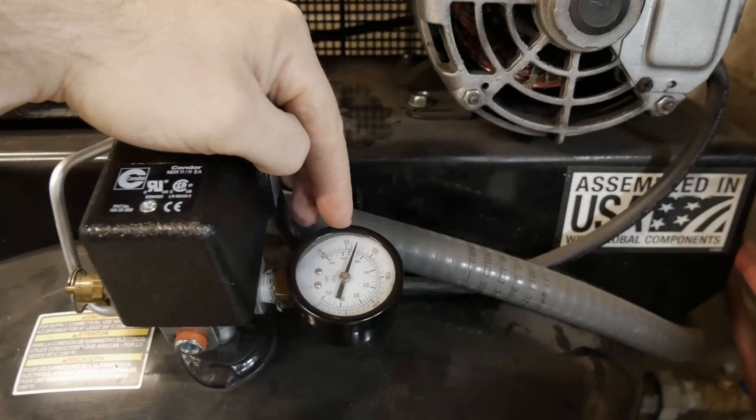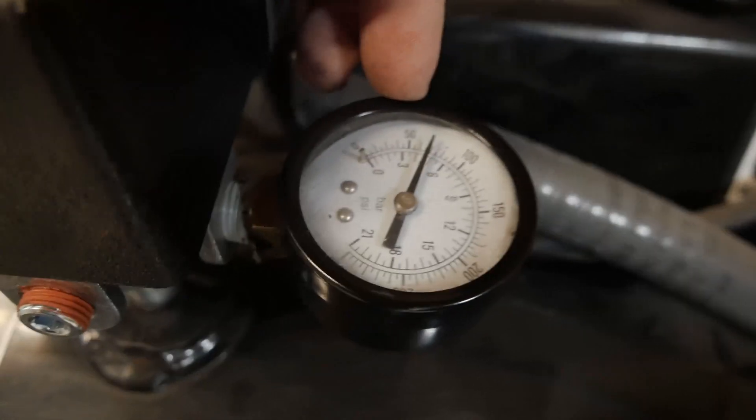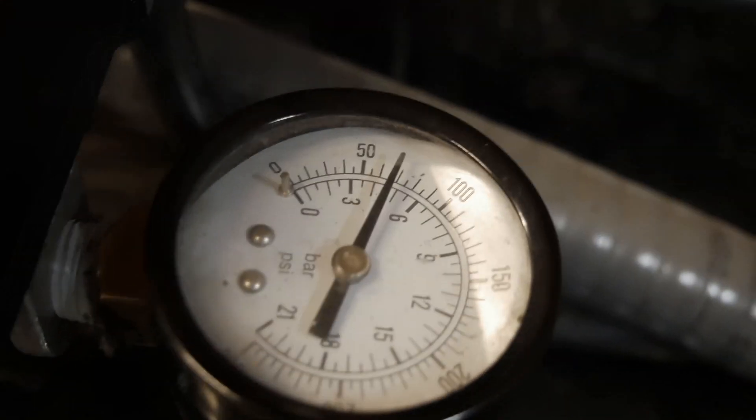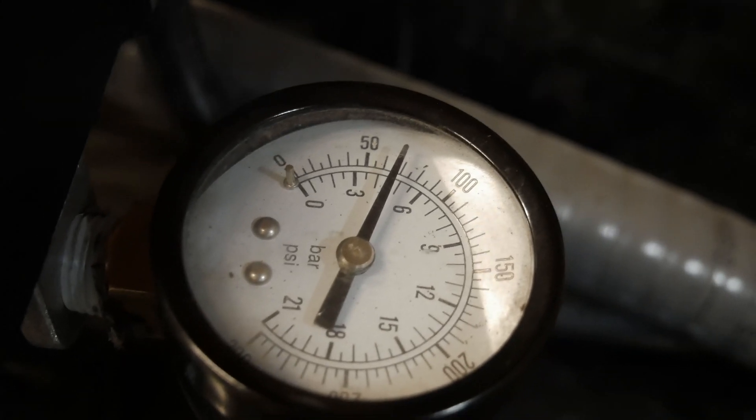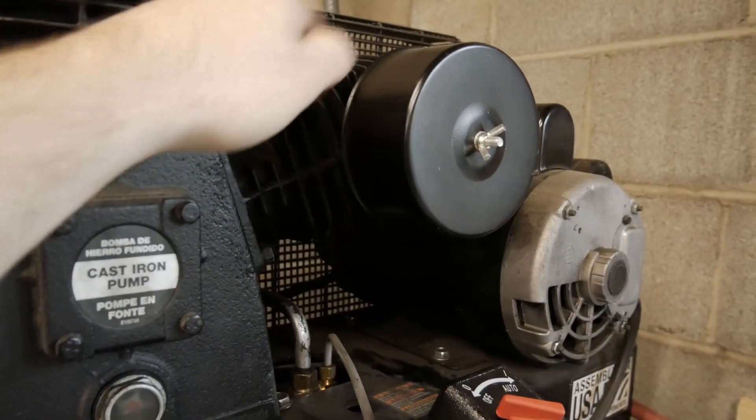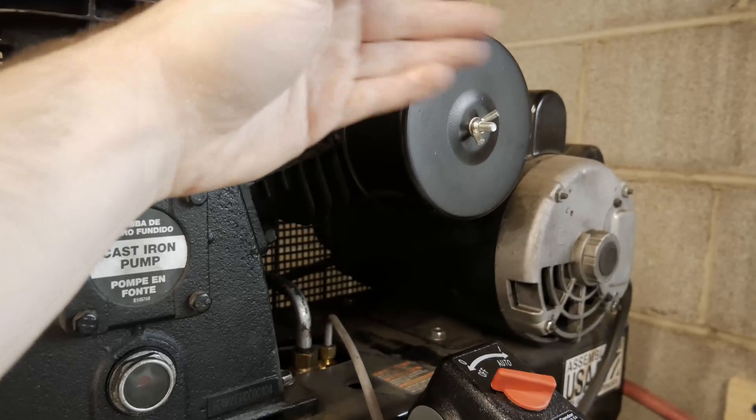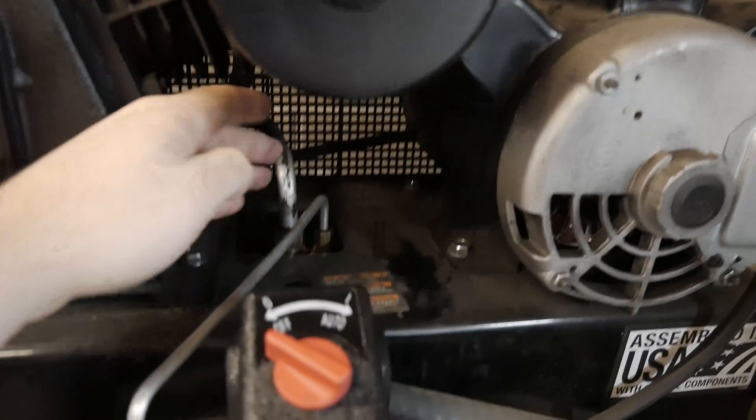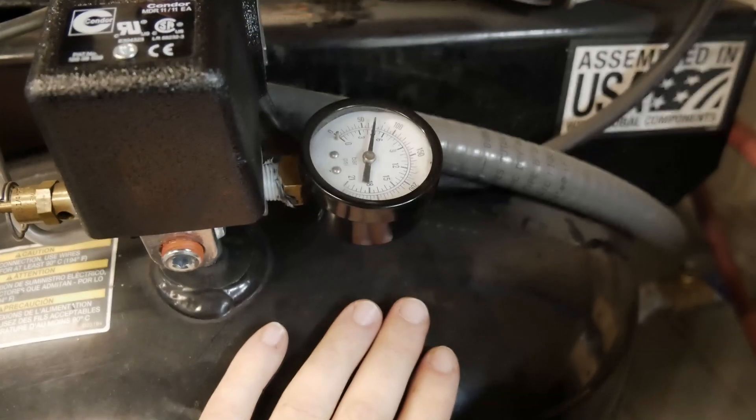Before when it was running we would stall out right around 50 to 75 psi and it wouldn't build any more pressure than that. That's because this cylinder right here was not actually building any pressure. As the piston went up and down it was blowing air in and out. It comes out of this tube, goes down through our check valve, and then you store pressure in your storage tank. So that process can't really occur with only two cylinders operating.